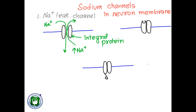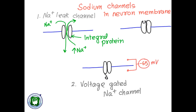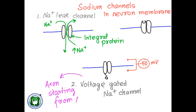Another important category is the voltage-gated sodium channel. These channels are sensitive to membrane potential. If there are changes in membrane potential from minus 65 to say minus 50, there is a three-dimensional configurational change in the protein channel. These channels are only present in the axon starting from the axon hillock. They are absent in dendrites and cell body, whereas sodium leak channels are present throughout the neuron.